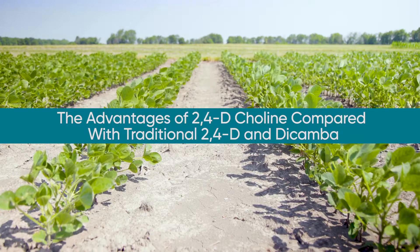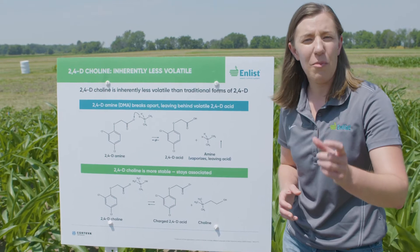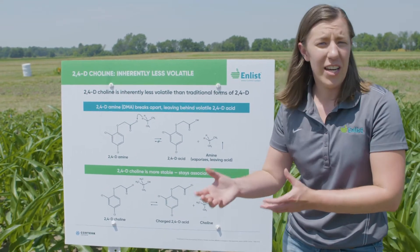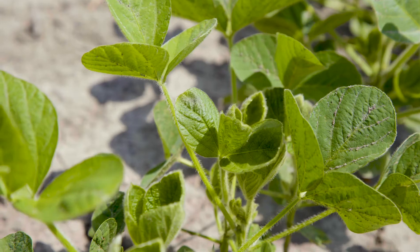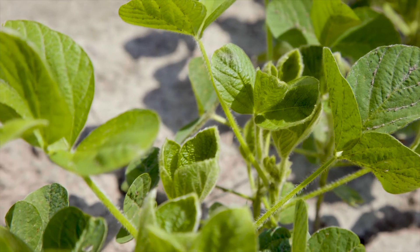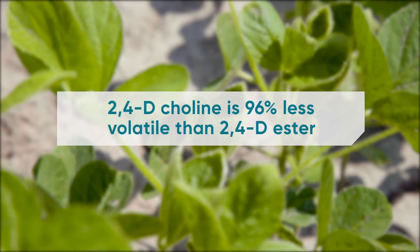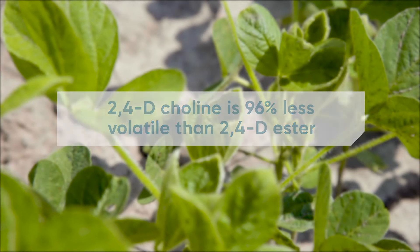The 2,4-D choline found in Enlist herbicides is a truly different form of 2,4-D as compared to an amine or an ester. We still have the same effective weed control that you know with 2,4-D, but with very different inherent volatility characteristics. In comparison to 2,4-D ester, 2,4-D choline is 96% less likely to volatilize than a 2,4-D ester.